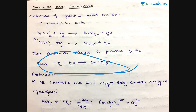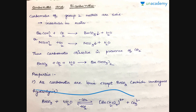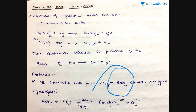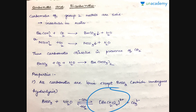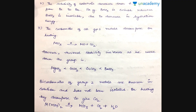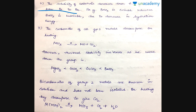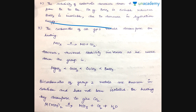All carbonates are ionic except beryllium carbonate, which undergoes hydrolysis forming a positively charged aqueous beryllium species. The stability of carbonates decreases down the group from beryllium to barium. For example, beryllium carbonate is insoluble while barium carbonate is soluble, and their solubility decreases as we move down the group due to decrease in hydration energy.